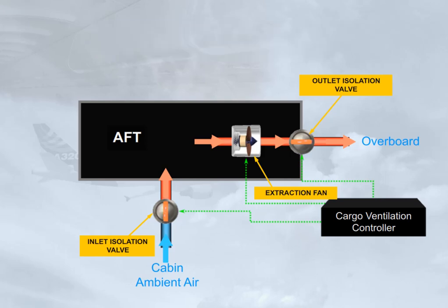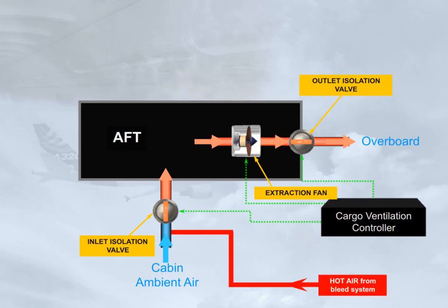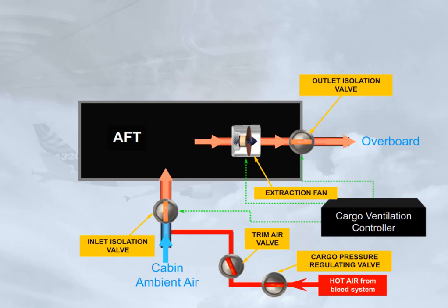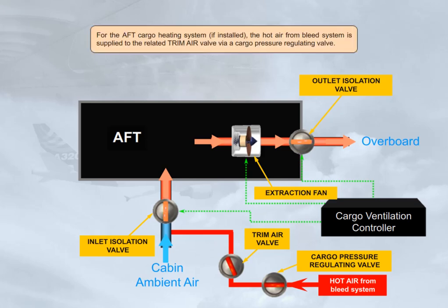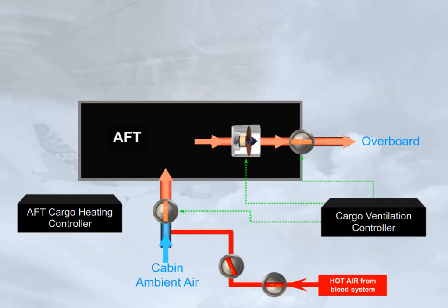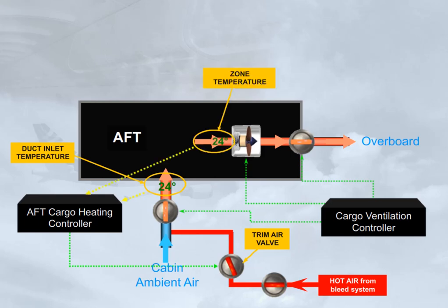For the aft cargo heating system, if installed, hot air from the bleed system is supplied to the related trim air valve via a cargo pressure regulating valve. The aft cargo heating controller controls the related trim air valve and monitors the related duct inlet and zone temperatures. Compartment heating is not available when the aft cargo door is open or when the cargo pressure regulating valve is closed.